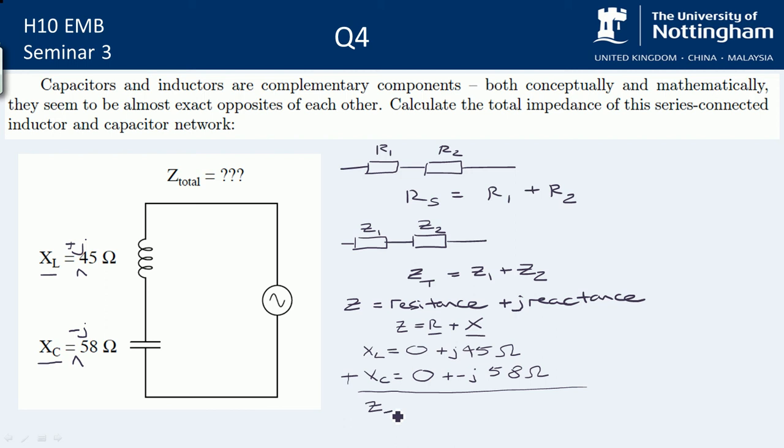So ZT is equal to, well, there's no real parts. That's still 0. And then we've got plus j, 45 and then minus j, 58. So what we end up with is minus j, 13 ohms. So the total impedance is 0 minus j, 13 ohms in rectangular form.